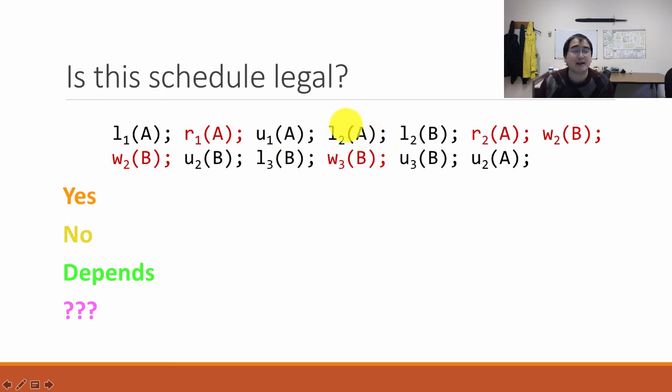Transaction 2 gets a lock on A. Is it allowed to? Yeah, because even though transaction A got a lock here, it unlocked it. So really, nobody has a lock at this point. Transaction 2 gets this lock on A. Transaction 2 gets a lock on B. Is it allowed to do that? Sure, nobody has a lock on B. So now transaction 2 has two locks, A and B. It does a read on A. It does a write on B. It's allowed to do both of those things because it has the locks. It does another write on B. It's allowed to do that because it has the lock on B. It unlocks B.